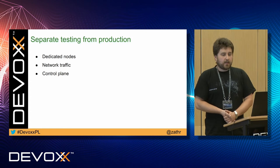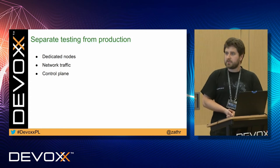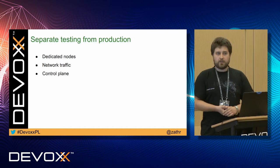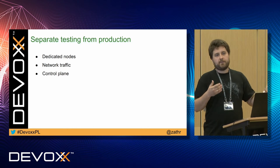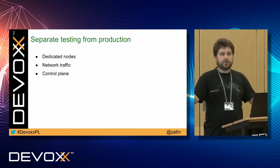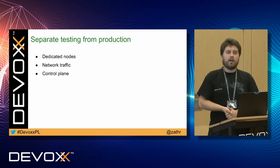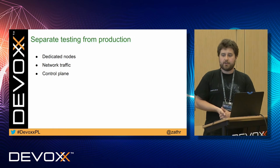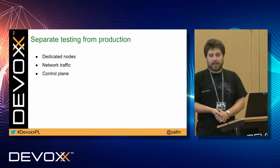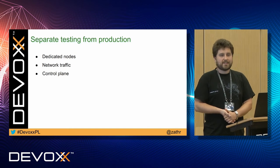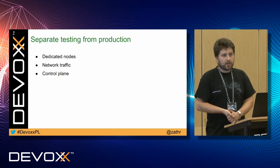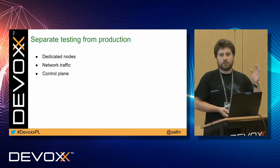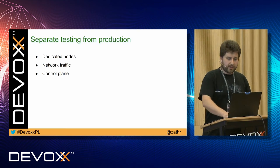Consider separating testing from production. That seems obvious, but has some quirks. You could say it's enough to just label your nodes production and staging, and you're fine. But have in mind that this doesn't provide any kind of network separation, and all of your pods still talk to the same control plane. So if you run a stress test through your staging pods, your production can also be affected.